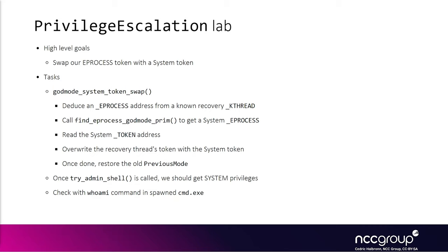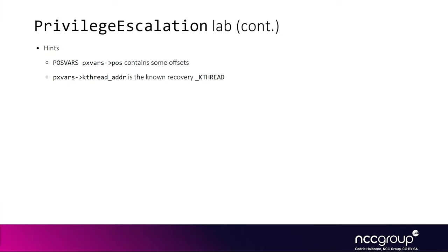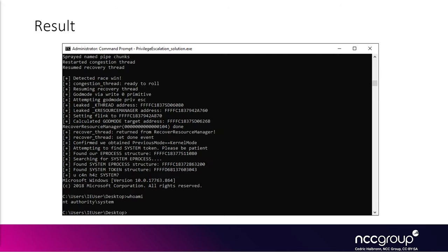We provide a helper function called try_admin_shell which allows us to spawn a shell, and we should get system privileges in a new cmd.exe, which you can confirm using the whoami command in the spawned shell. You can use the offsets provided in the global posvar structure — which stands for pointer operating system variables. Similarly, we have the recovery thread KTHREAD address in pxvar, which stands for pointer exploit variables. Having this global structure makes it easy to support different OS versions. This slide shows a successful run where whoami returns NT AUTHORITY\SYSTEM.